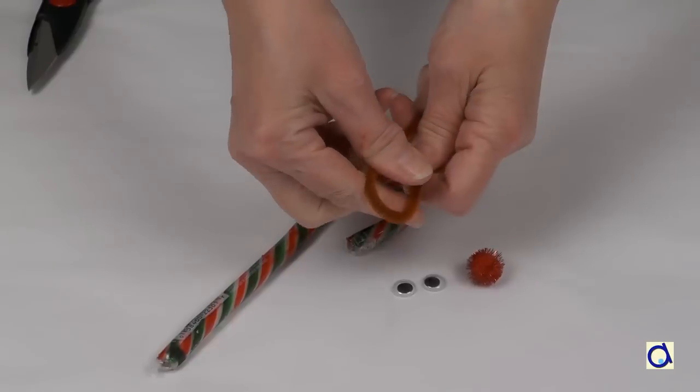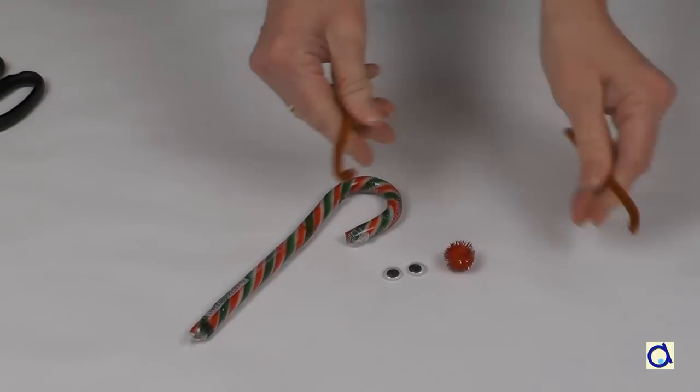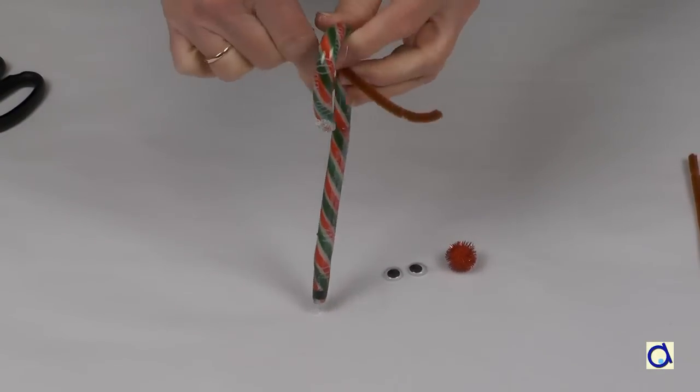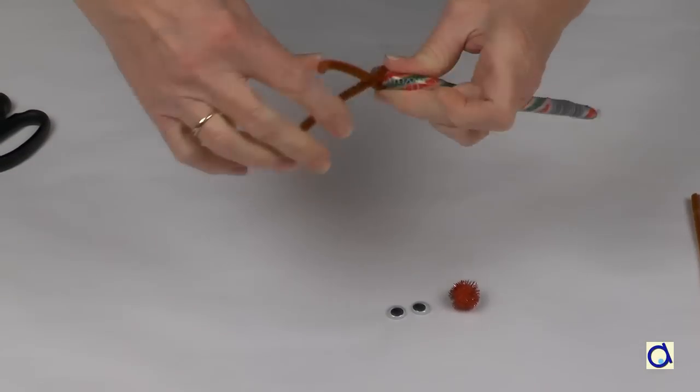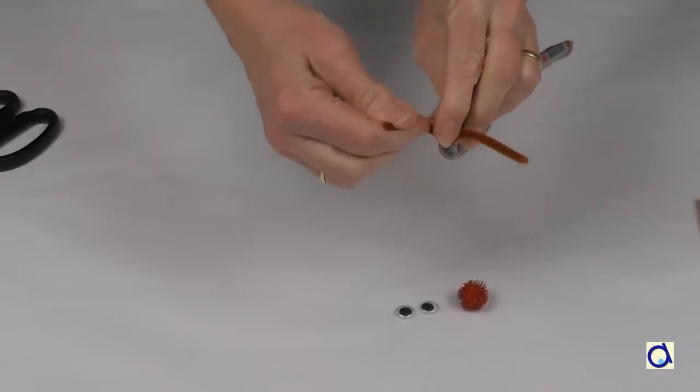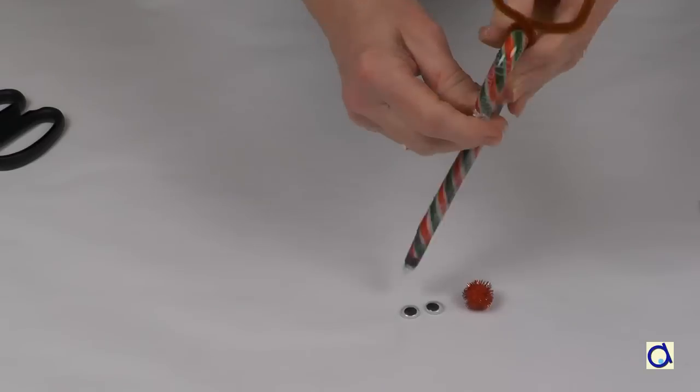Take a pipe cleaner and cut it in half. Tie the half pipe cleaner in the curve of the candy cane by twisting it. The pipe cleaner represents the antlers of the reindeer. The length of the pipe cleaner is left to your discretion.